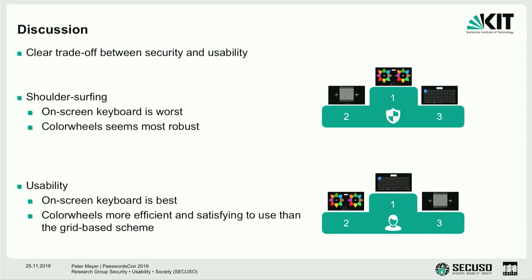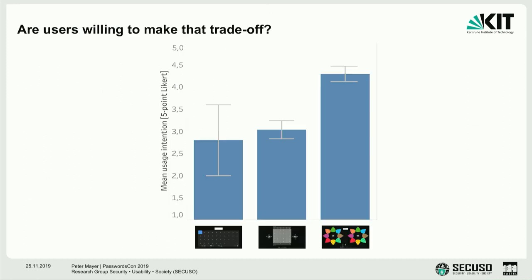There is a clear trade-off between security and usability: the on-screen keyboard fares worst in shoulder-surfing resistance, while color wheels is most robust, but the inverse is true for usability. The question is whether users are willing to make this trade-off. We asked if they would continue using the scheme after the study, and color wheels scored significantly better than the other two, suggesting people are aware of and willing to make this trade-off.